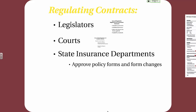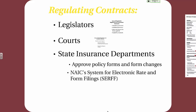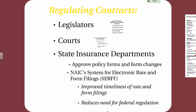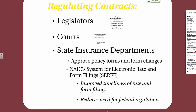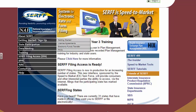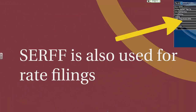State insurance departments in most states approve policy forms and form changes. The NAIC's SERFF system — System for Electronic Rate and Forms Filing — improved the timeliness of rate and form filings and reduces the need for federal regulation. Similar to the National Insurance Producer Registry, it provides a clearinghouse for rate filings and contract filings. The SERFF system is especially advantageous to companies operating in multiple states, allowing them to upload contract changes into SERFF to be approved by all states in which they operate without having to make multiple individual filings, and it is also used for rate filings.